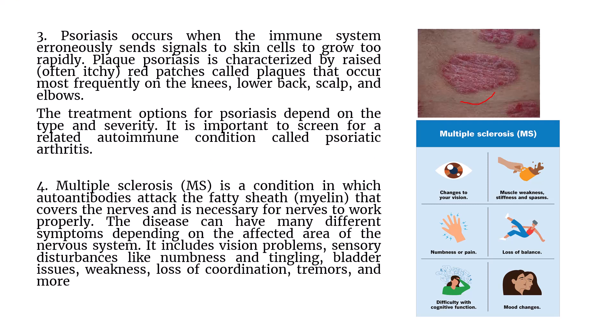Multiple sclerosis is a condition in which autoantibodies attack the fatty myelin sheath. This myelin sheath covers the nerve fiber at the axon and helps in the proper transmission of signals from one neuron to another. This disease can have many different symptoms depending on the affected area of the nervous system, including changes in vision, muscle weakness, numbness or pain, loss of balance, difficulty with cognitive functions, mood changes, and tremors.